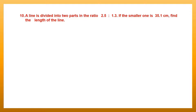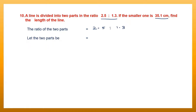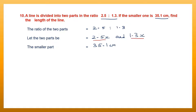Question 10. A line is divided into two parts in the ratio 2.5 is to 1.3. If the smaller one is 35.1 cm, find the whole length of the line. Let the two parts be 2.5x and 1.3x. The smaller part is 35.1 cm. Between 2.5 and 1.3, the smaller one is 1.3. That means 1.3x is equal to 35.1 cm.